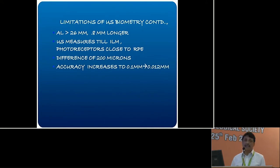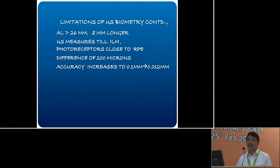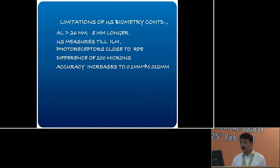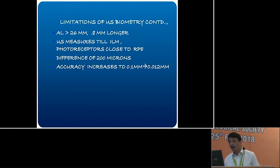The third difference is accuracy. Accuracy increases from 0.1 mm with ultrasound to about 0.012 mm with optical biometry, which is quite significant because of the shorter wavelengths. So those are three basic theoretical problems of ultrasound that optical biometry addresses.